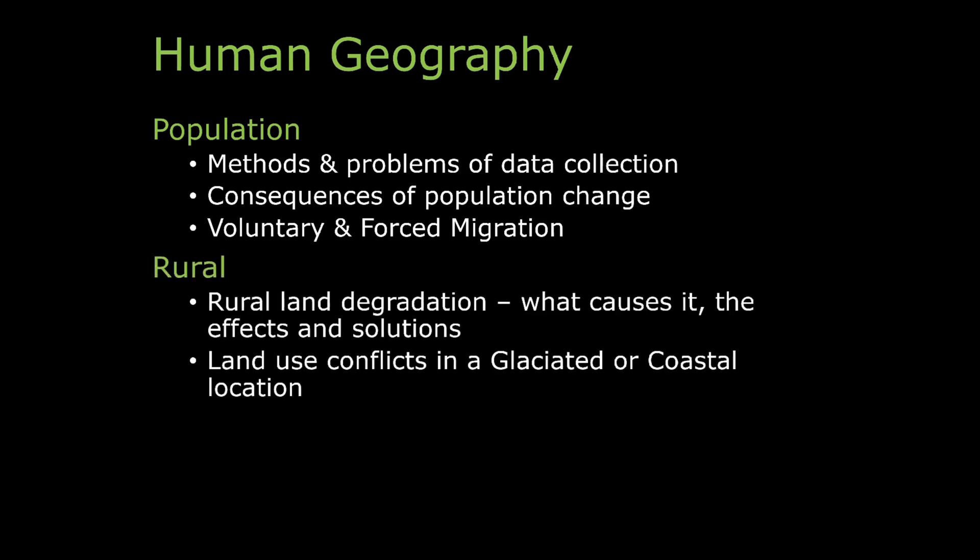Rural includes a brand new section called rural land degradation - what causes it, the effects and solutions. We look at a case study on the Sahel, but there are other places in the world where this happens. Land use conflicts in a glaciated or coastal location - previously in National 5 this was part of physical geography, but it now looks more at the human interactions between people, how these conflicts are managed and how effectively they are managed.